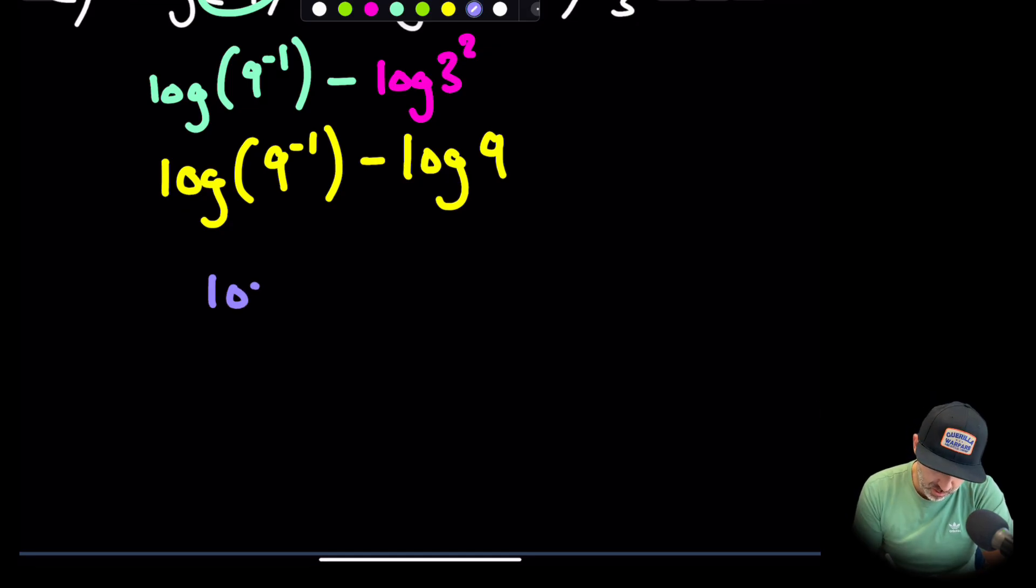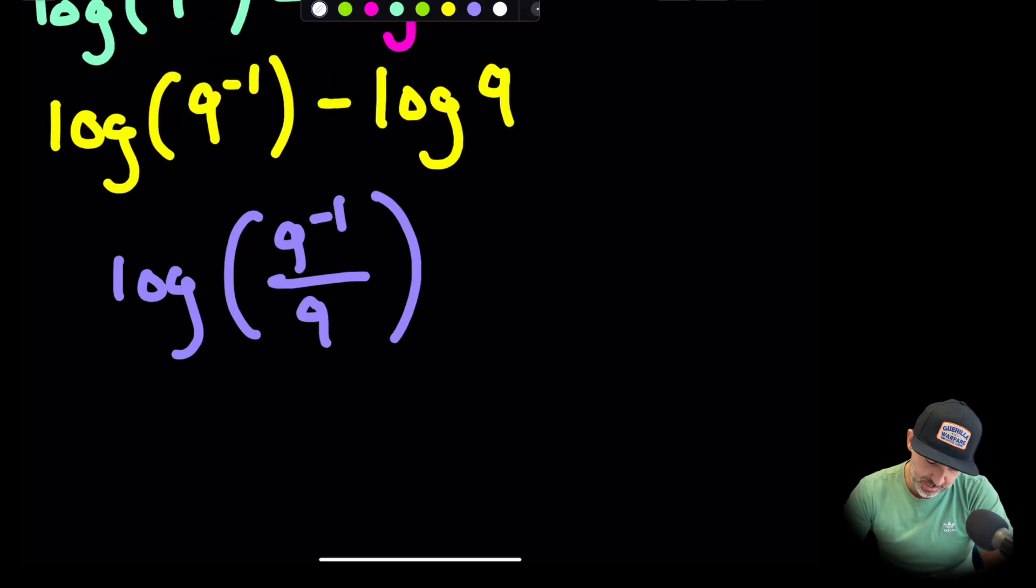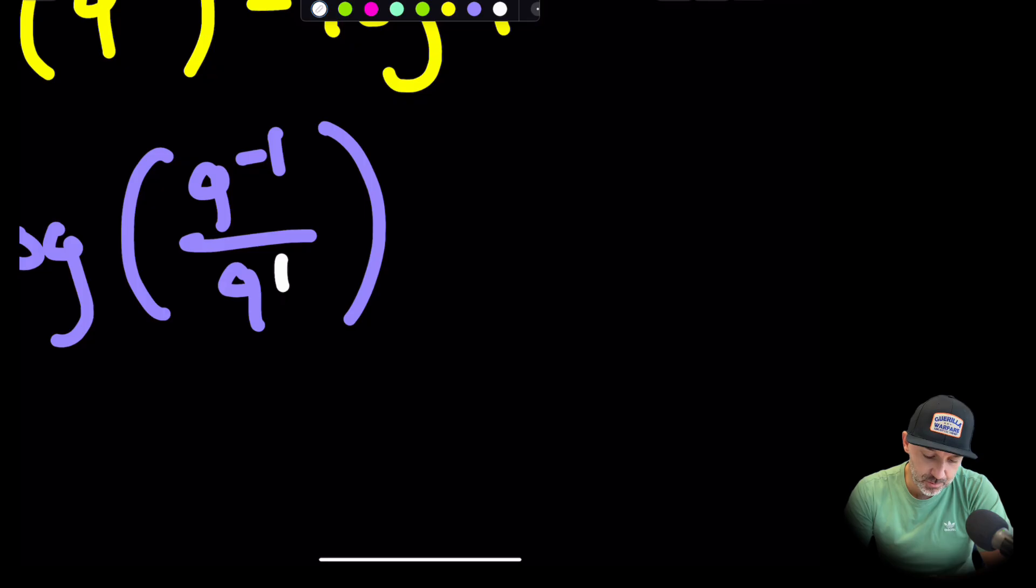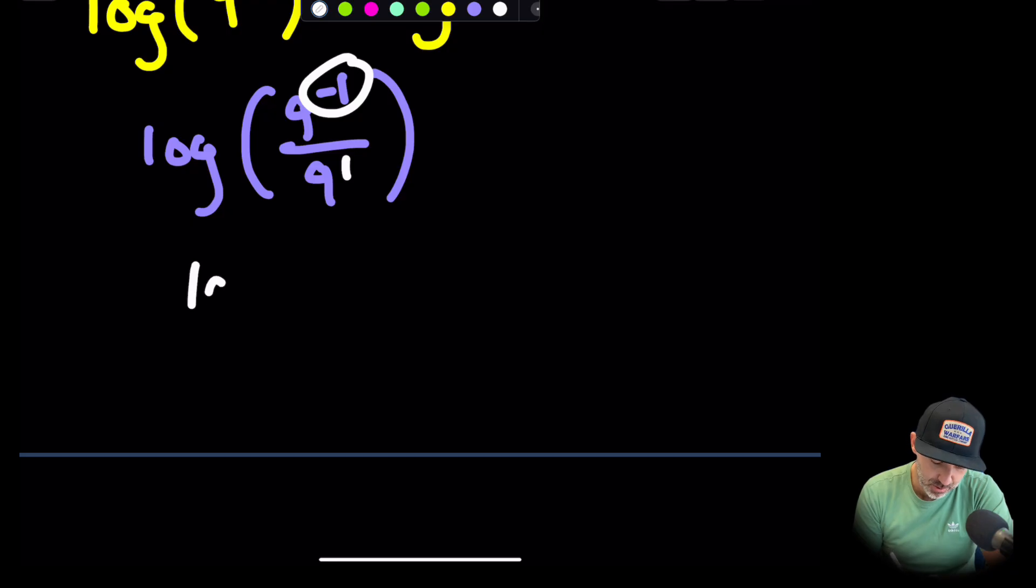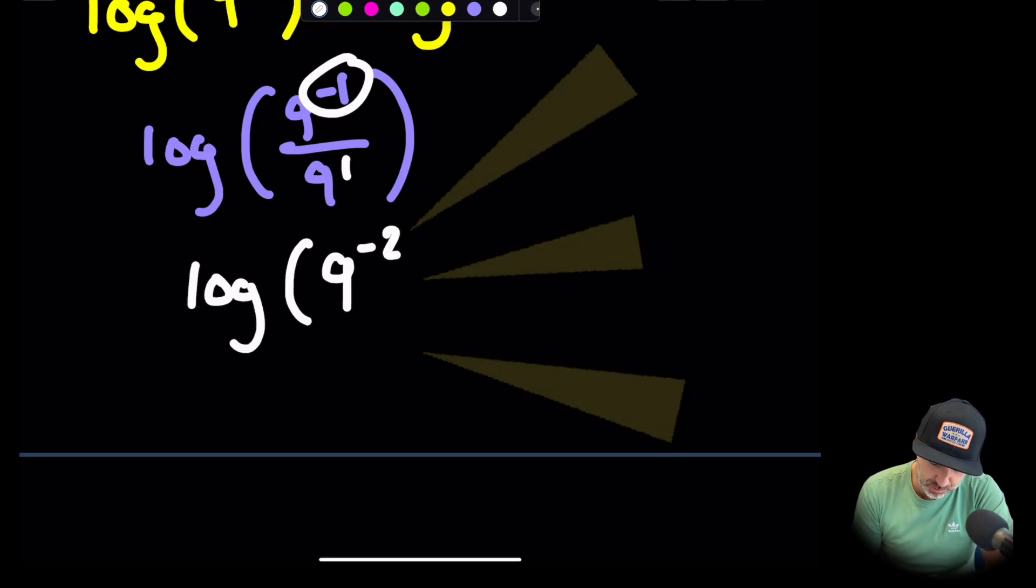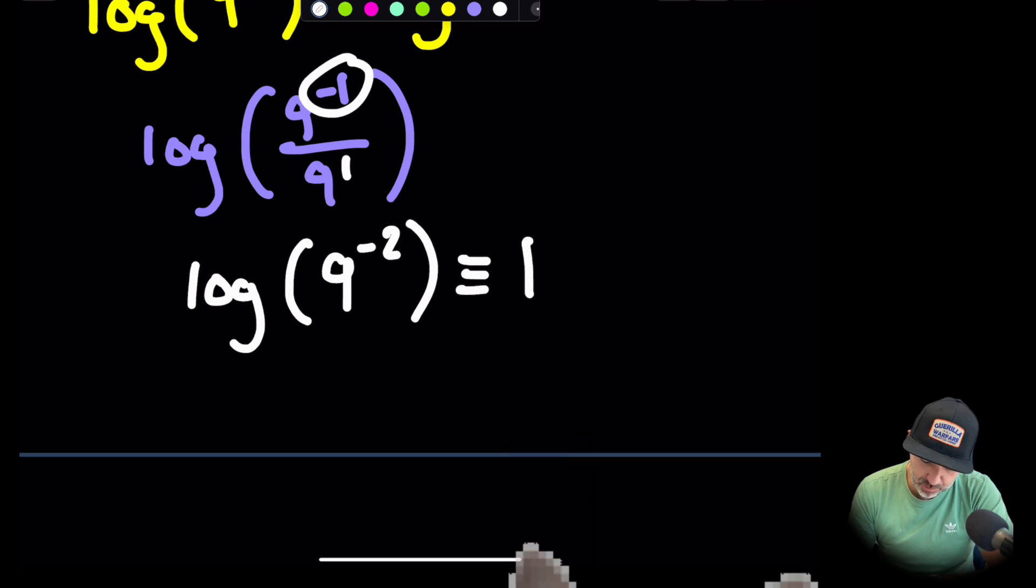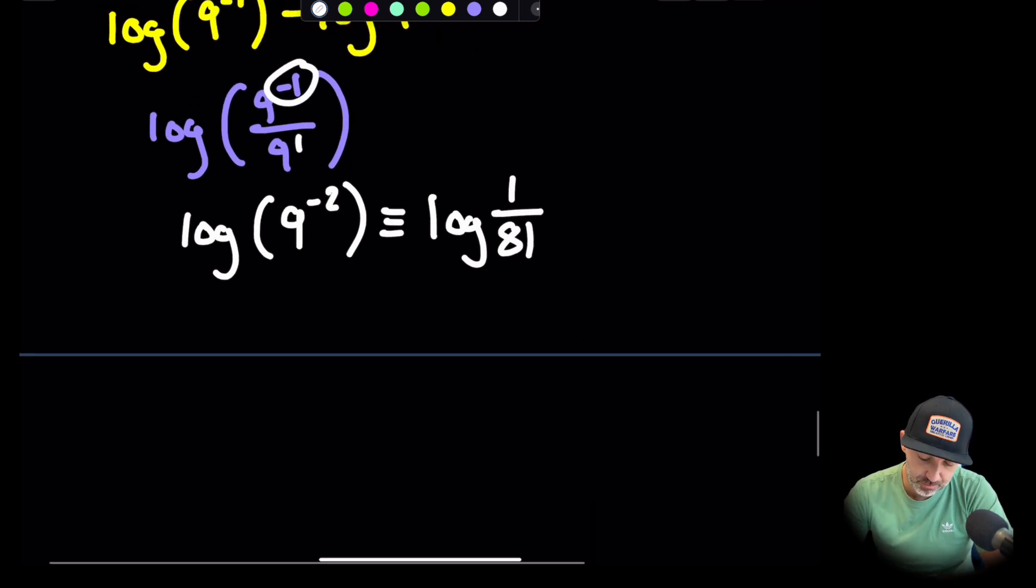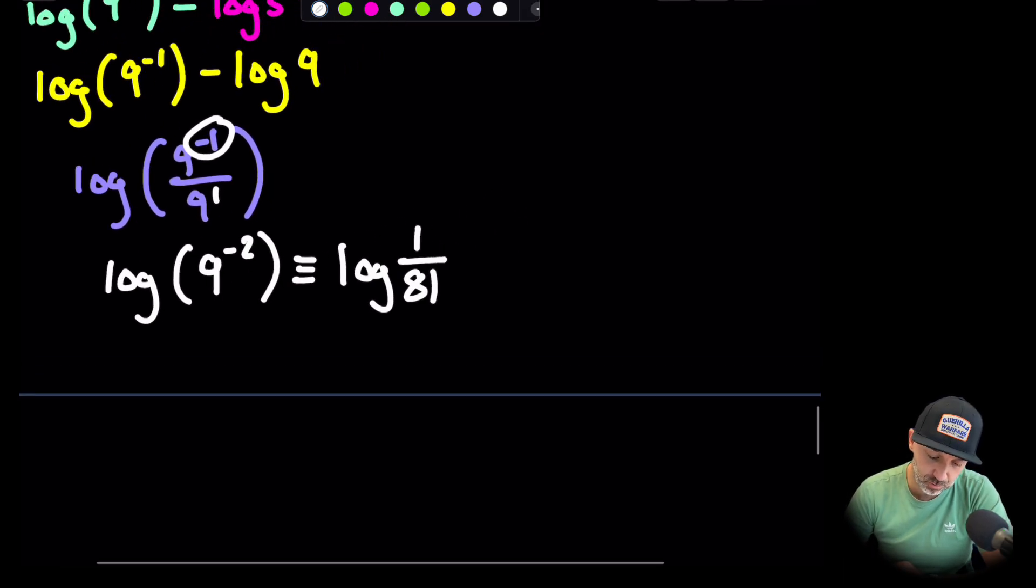We should be able to combine those two now. We have log 9 to the minus 1 divided by 9. If you think about this as being 9 to the power of 1, then when you divide those you have negative 1 subtract 1, so that would be negative 2. So we have log to the power of 9 to the minus 2, which is also equivalent to log to the power of 1 over 81. So really either of those forms is the answer in a singular logarithmic form.